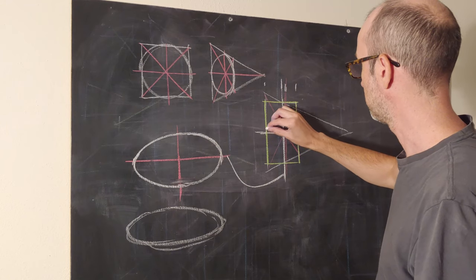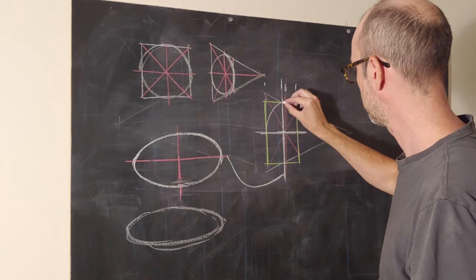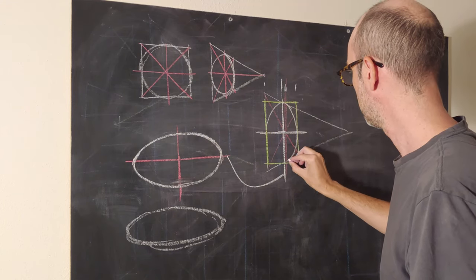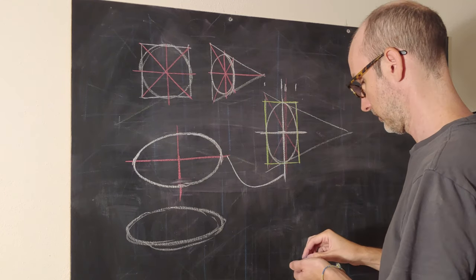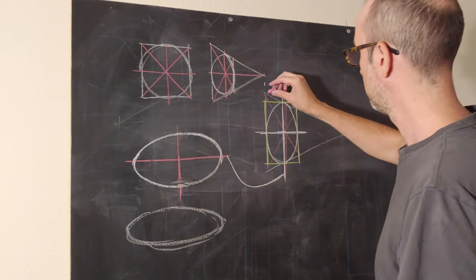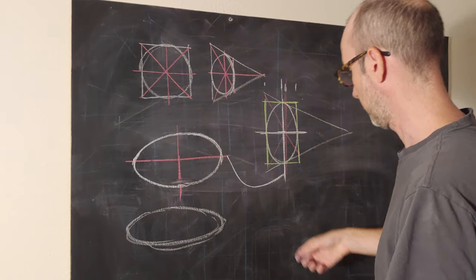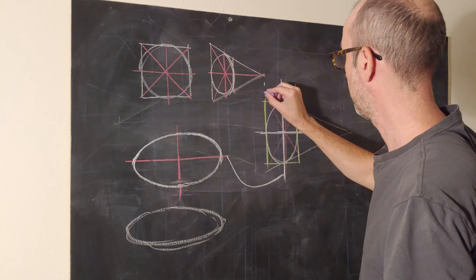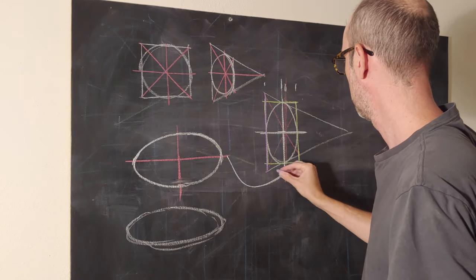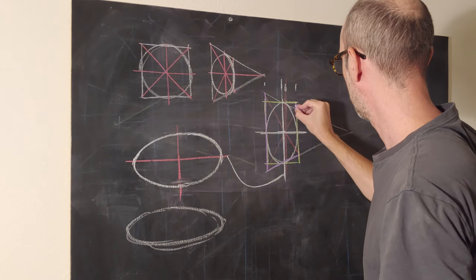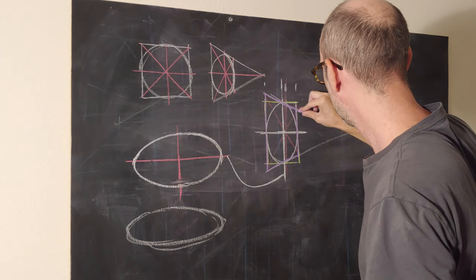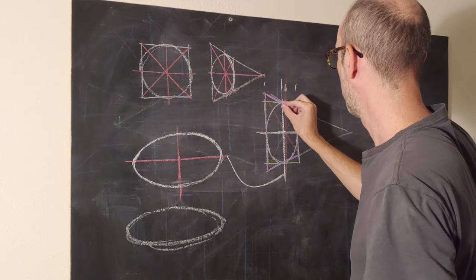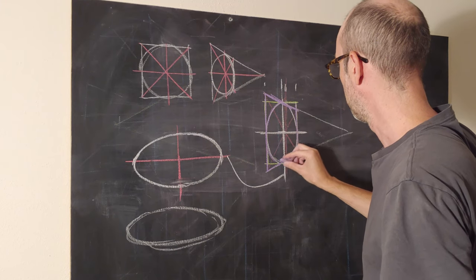So now we can go in and sketch in our ellipse. Then we can come back with a different color and reemphasize our perspectival box and reemphasize our ellipse within it.